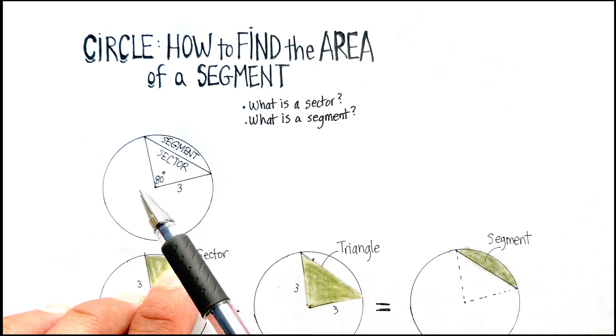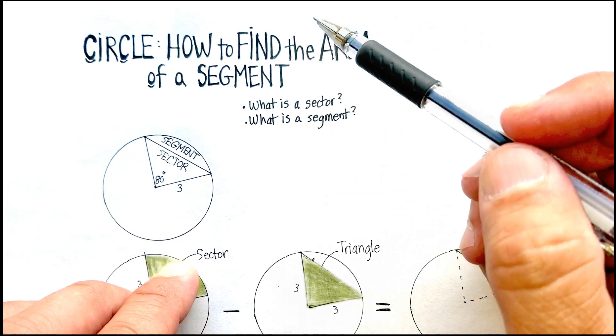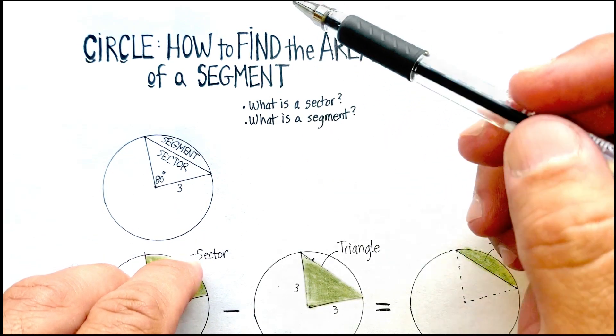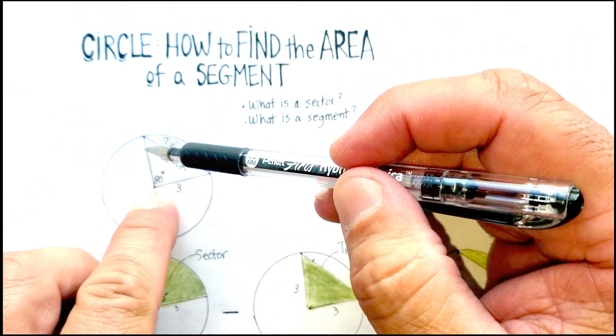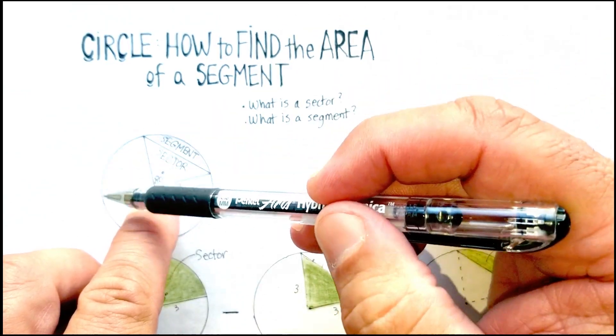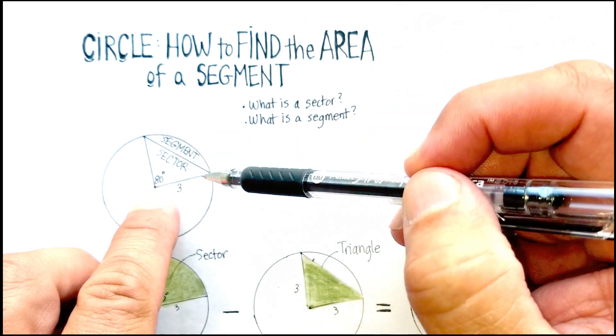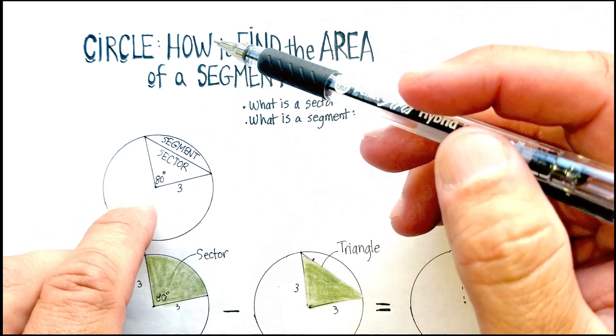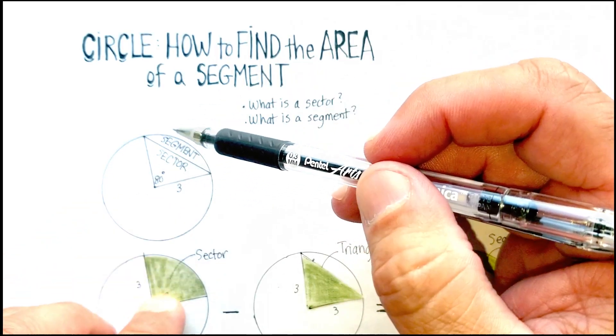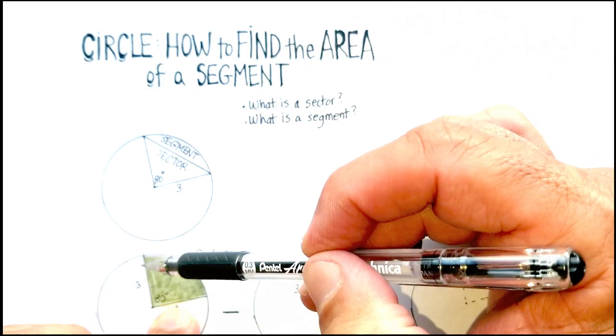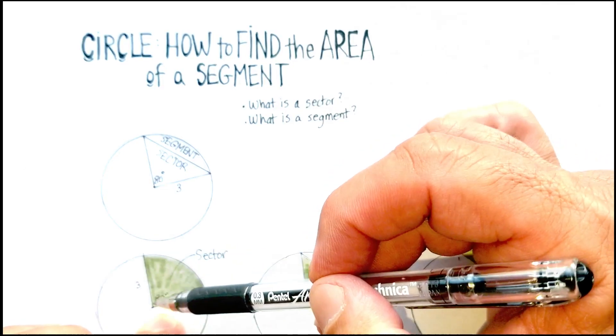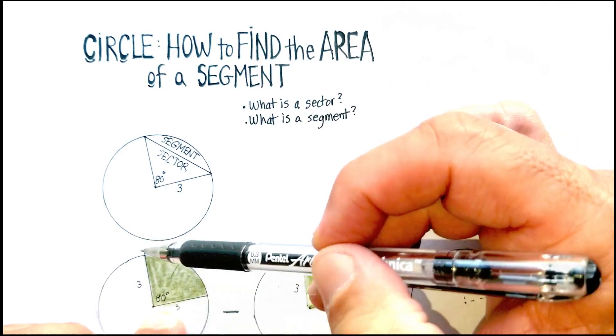You can see on this illustration that I have over here, the segment, or actually let's start with a sector. A sector is if I took out a piece of a circle, just like I was cutting a pie or cutting a pizza. A sector basically is very similar to a central angle.